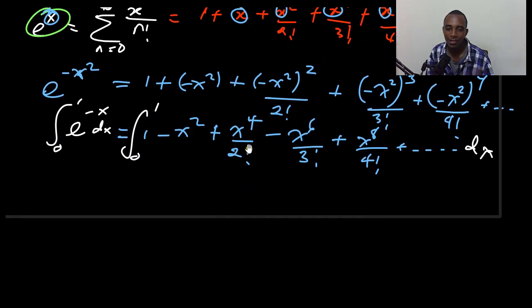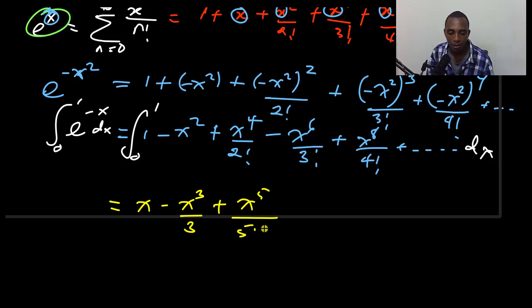You realize this is a simple polynomial that we know how to integrate. So let's go ahead with the integration. This is going to be x minus x cubed over 3 plus x to the power 5 over, so drop the power down here, 5 times 2 factorial.